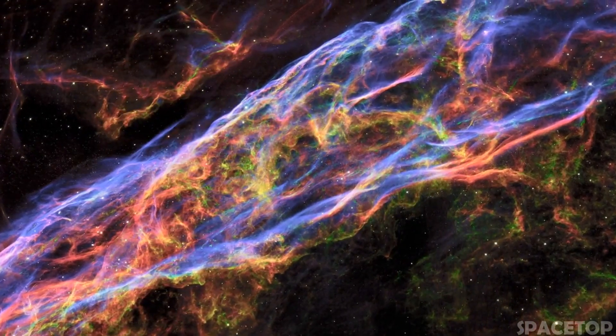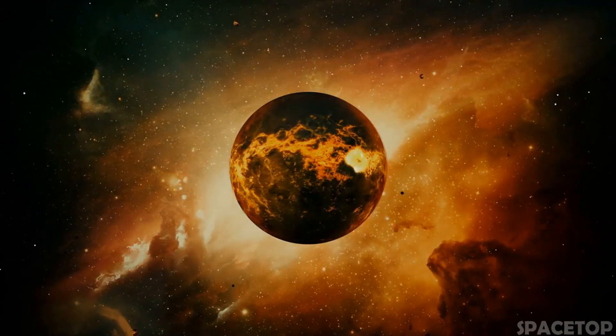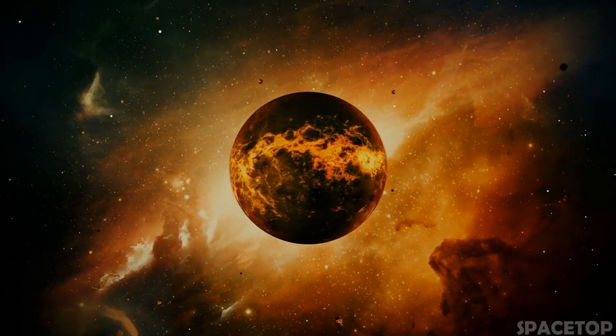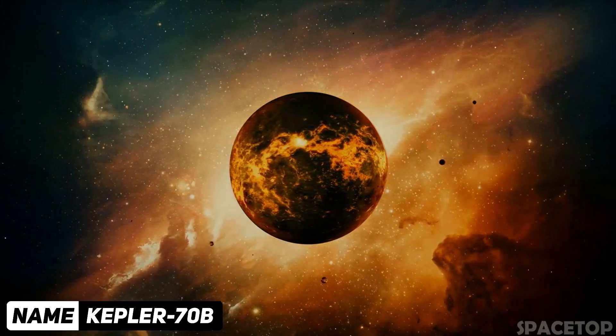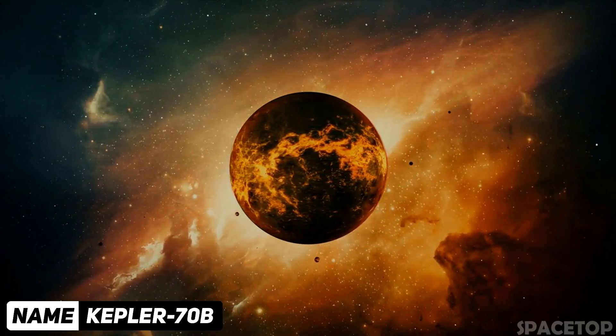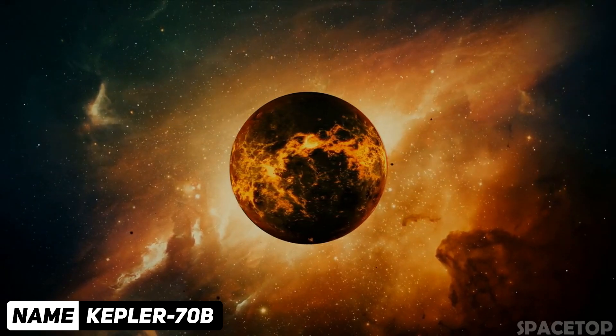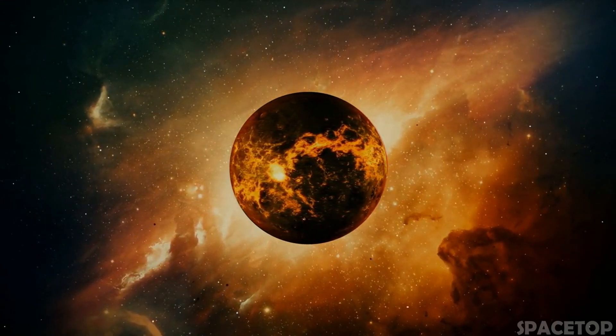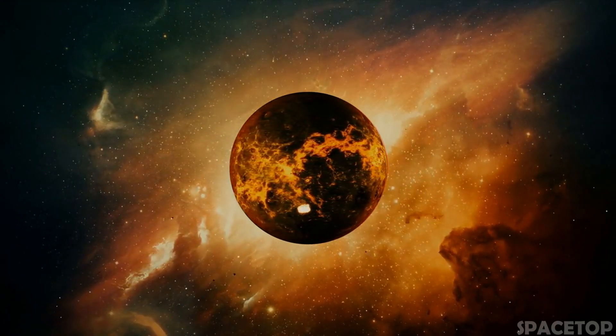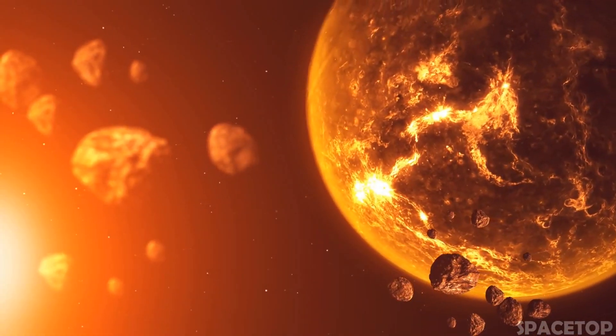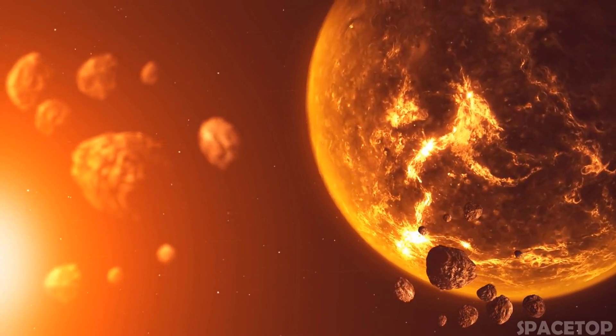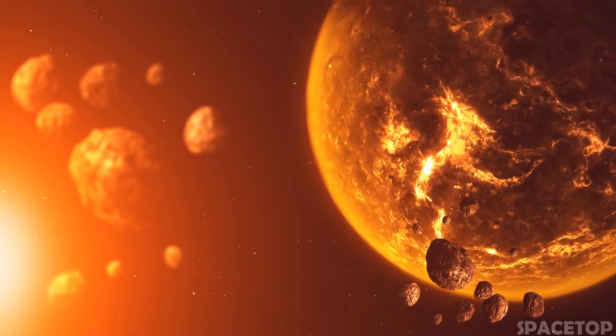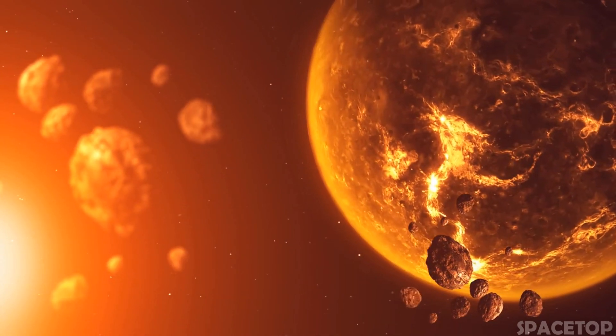Now, let's move on to the constellation Cygnus. There, about 650 light years from us, is a red-hot world Kepler-70b with a mass of only half the Earth's and a radius almost twice the radius of our planet. It is one of the hottest exoplanets known to us. The planet star Kepler-70 was once a main sequence star similar to our Sun, while Kepler-70b used to be a gas giant the size of Jupiter.